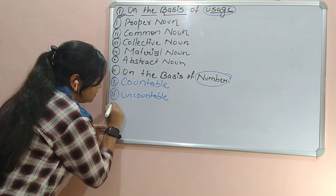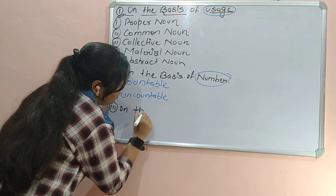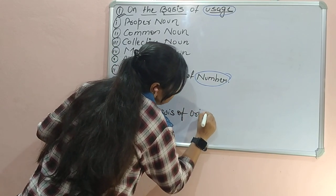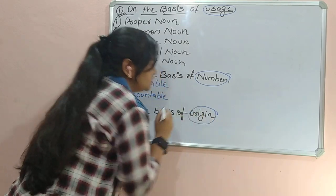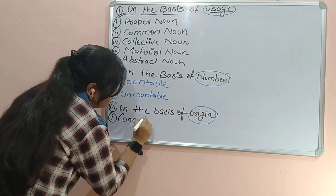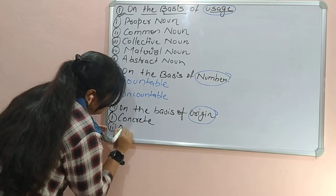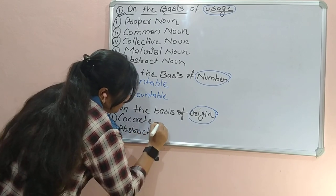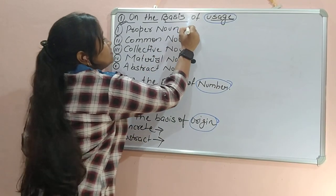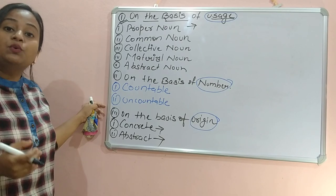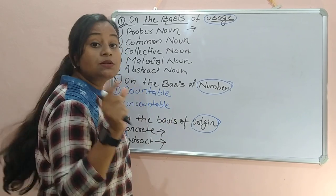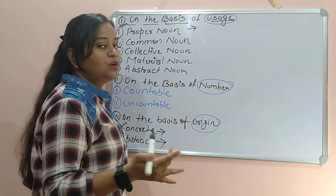Now let's understand the types in brief. First is proper noun. Proper noun is the name of a particular person, place, thing, animal, or any feeling or idea — which is particular to us, not common to everyone. For example: Patna, Ram, Mahatma Gandhi. It is proper because it is particular, not common to every place or everyone.